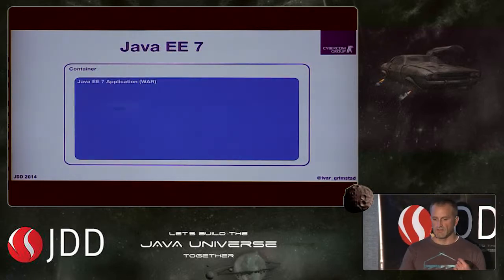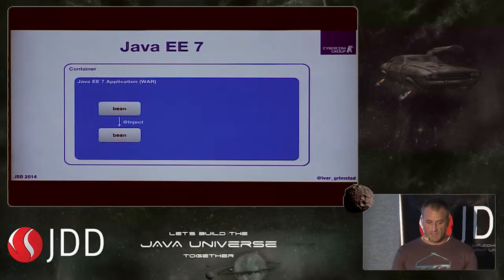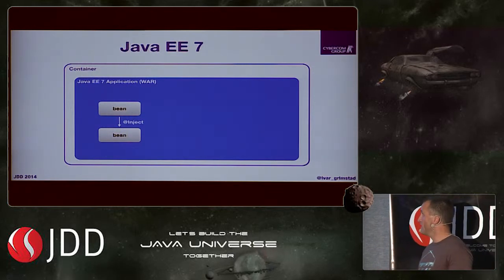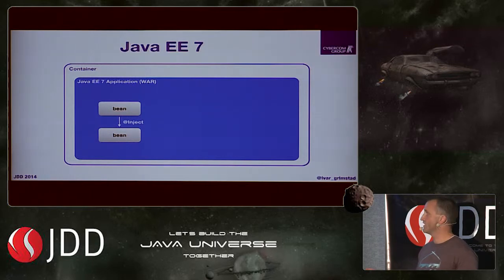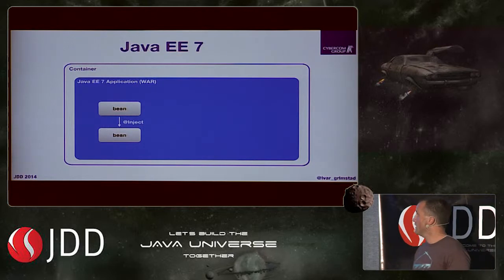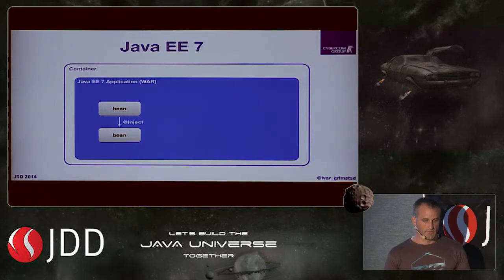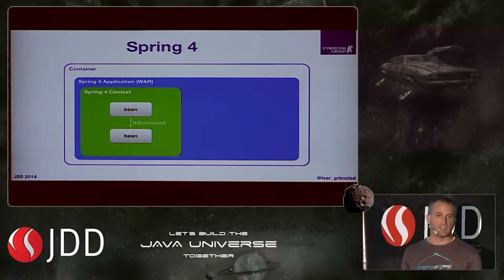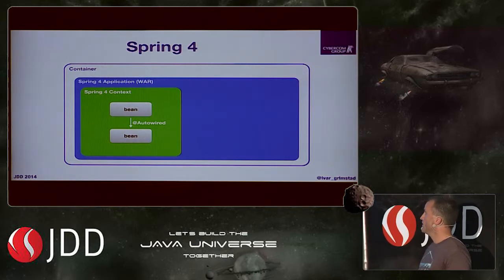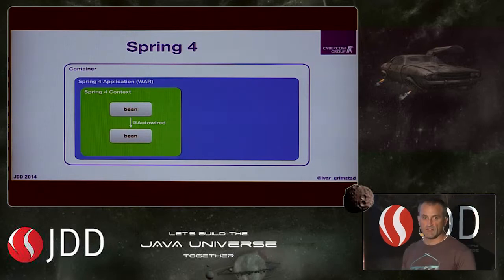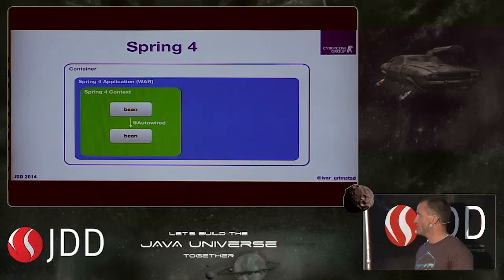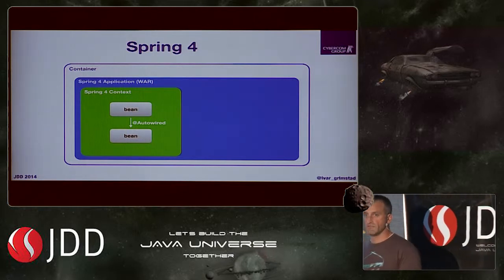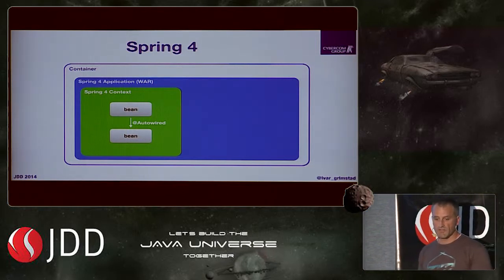For a quick example: in a Java EE application, it runs inside a certified Java EE container, packaged as a WAR file, with CDI used to inject beans. In the Spring case, the container doesn't need to be a Java EE 7 certified container, because inside the WAR file you bring the Spring container and Spring context where the beans live. You use @Autowired — though Spring also supports @Inject — but @Autowired is the Spring way of doing it.